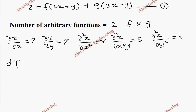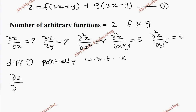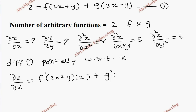Let's take the first expression and differentiate it partially with respect to x. This becomes ∂z/∂x equal to f′(2x + y) · 2, then g′(3x − y) · 3. This is our second expression.